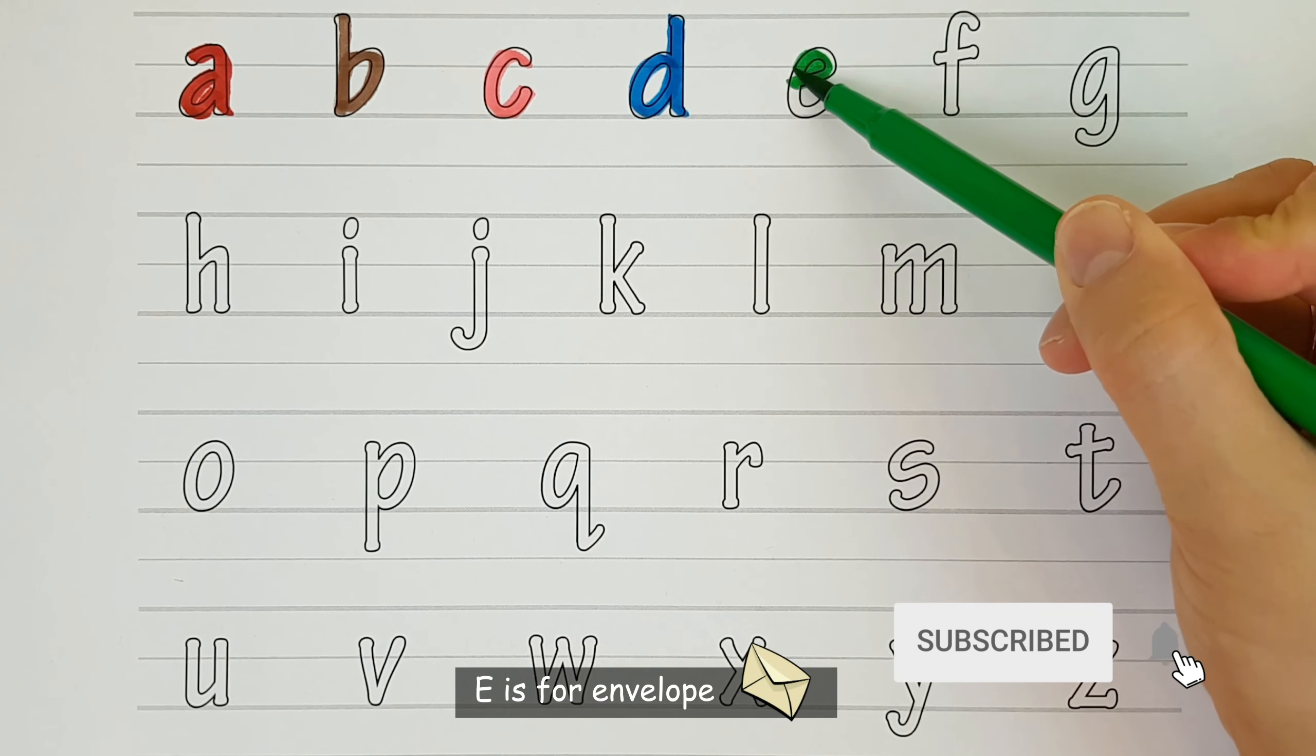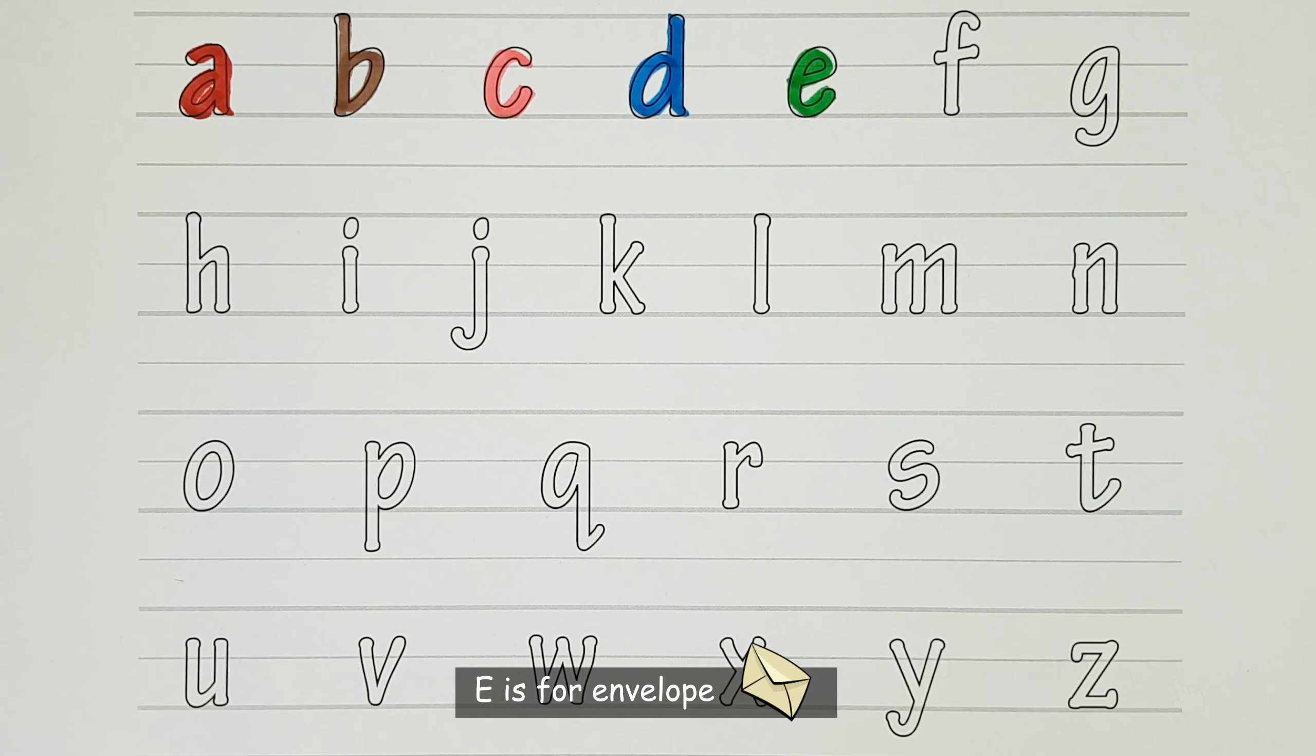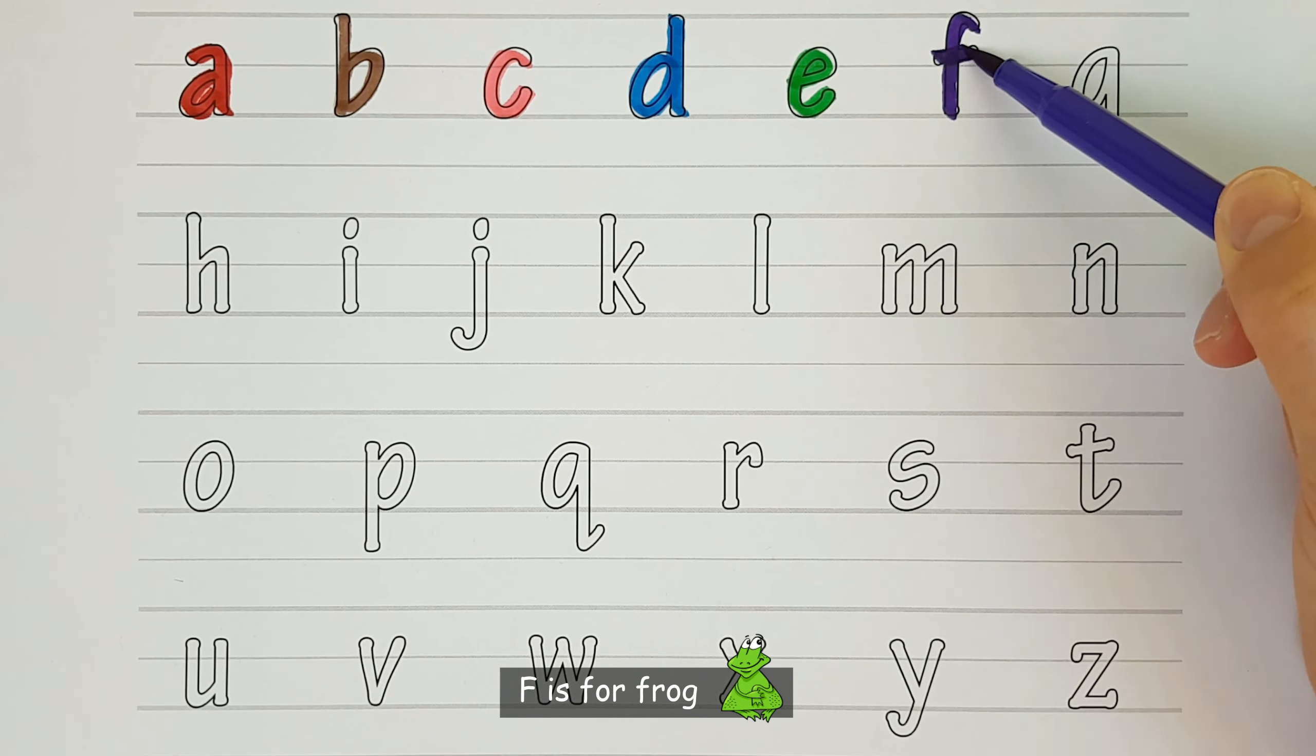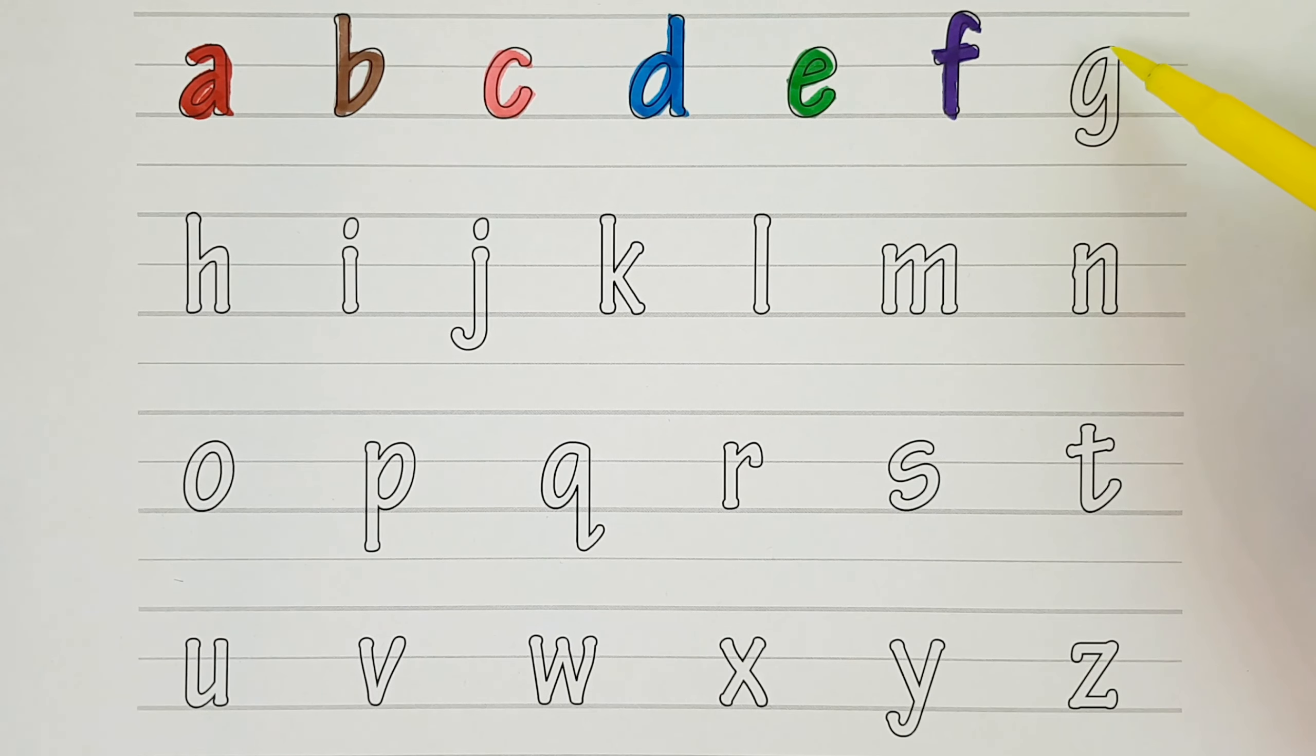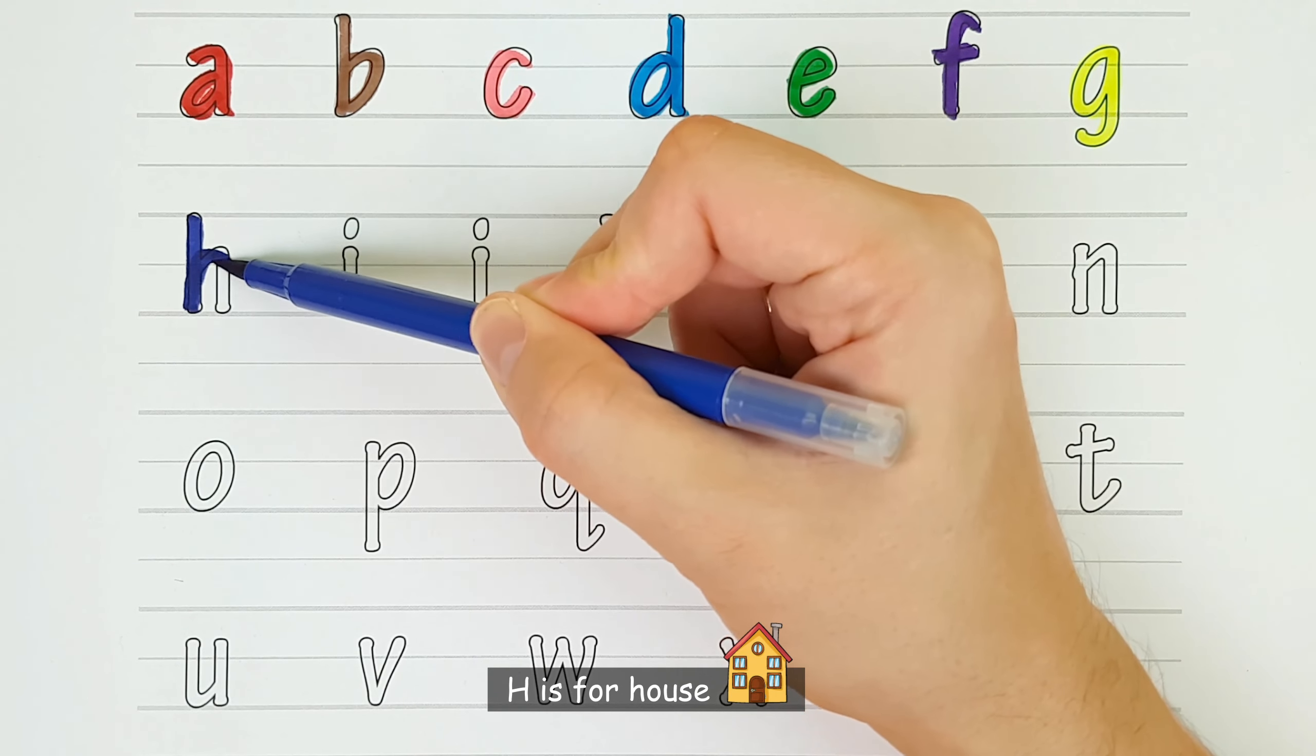E. E is for Envelope. F. F is for Frog. G. G is for Gorilla. H. H is for House.